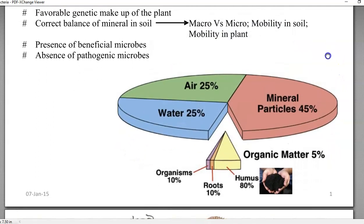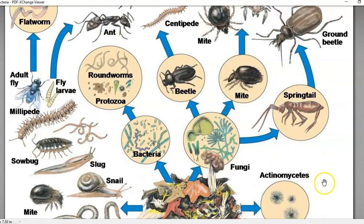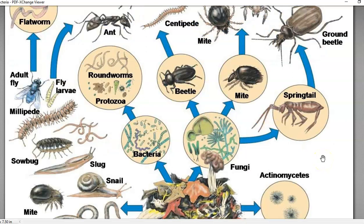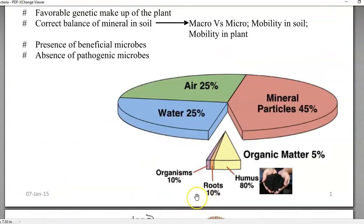If you look at the soil composition, 25% is covered with air, 25% with water, and 45% constitutes the mineral particle — in which mainly inorganic macro and micro elements will be present. The remaining 5% goes to organic matter. Organic matter is composed of organisms present there, and all these various kinds of organisms constitute about 10% of the organism portion in the soil system.